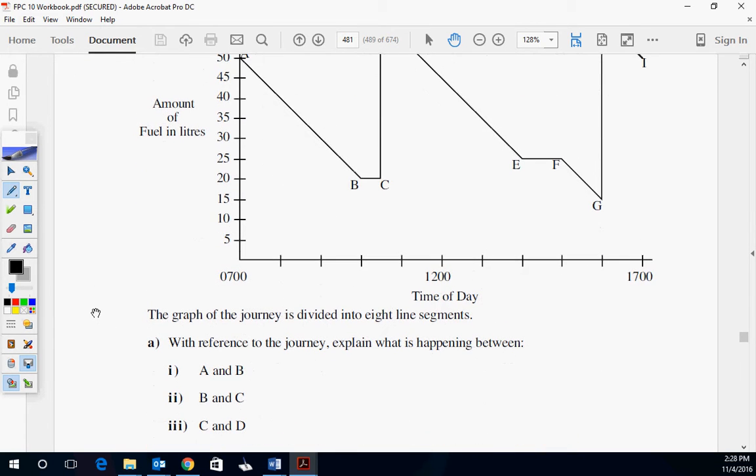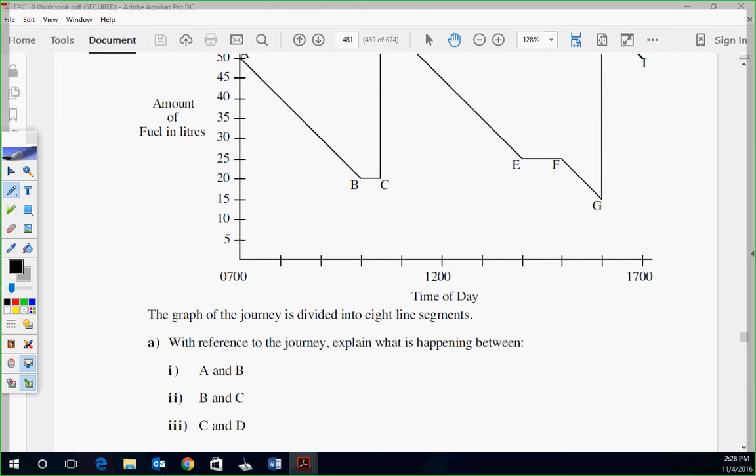So with reference to the journey, explain what's happening between A and B. Driving. So you can write driving right there. B and C, parked or engine's not running. Let's put parked, it's fine.